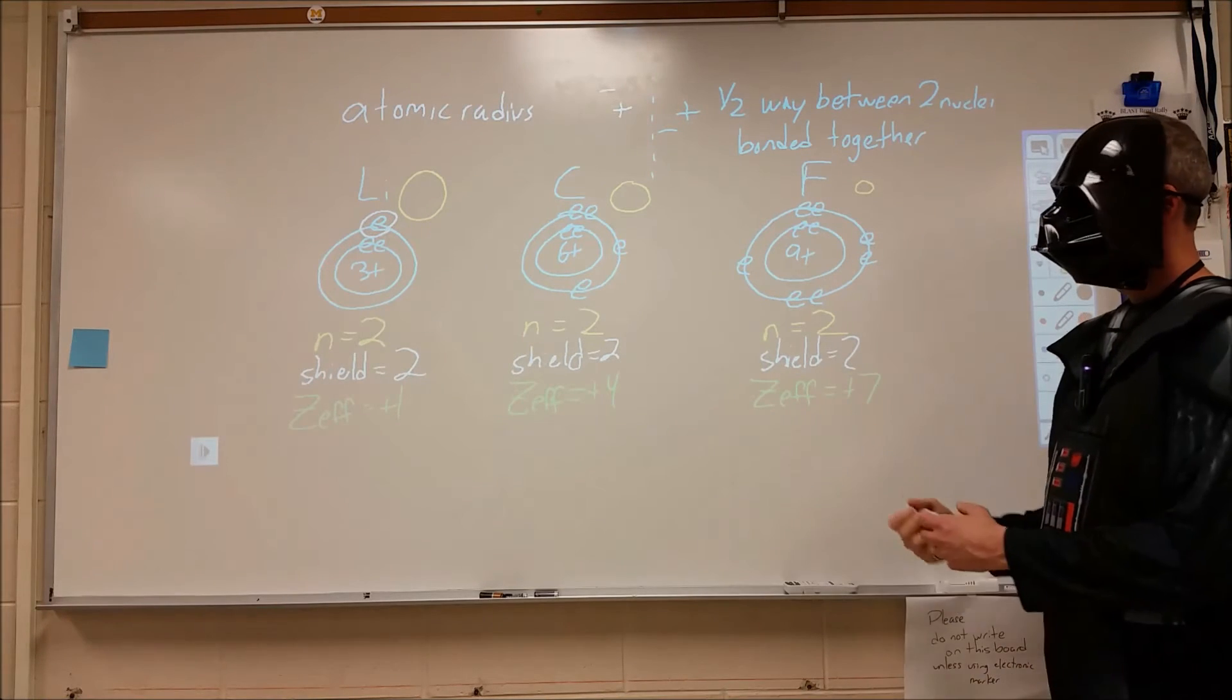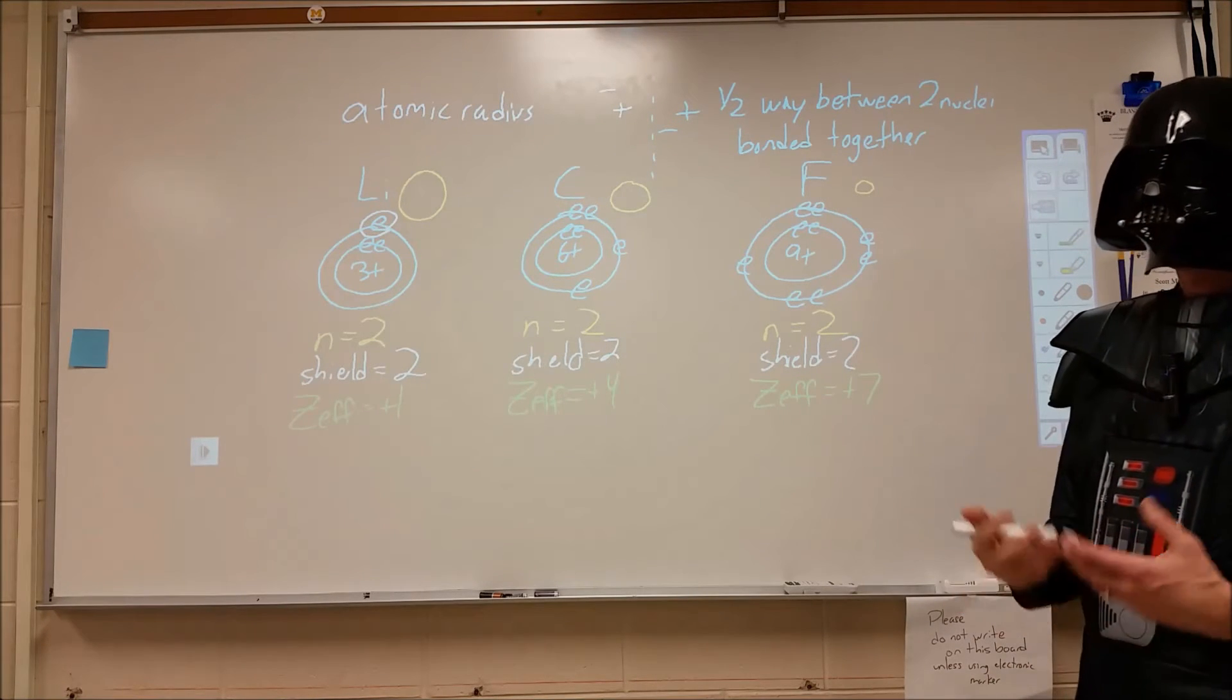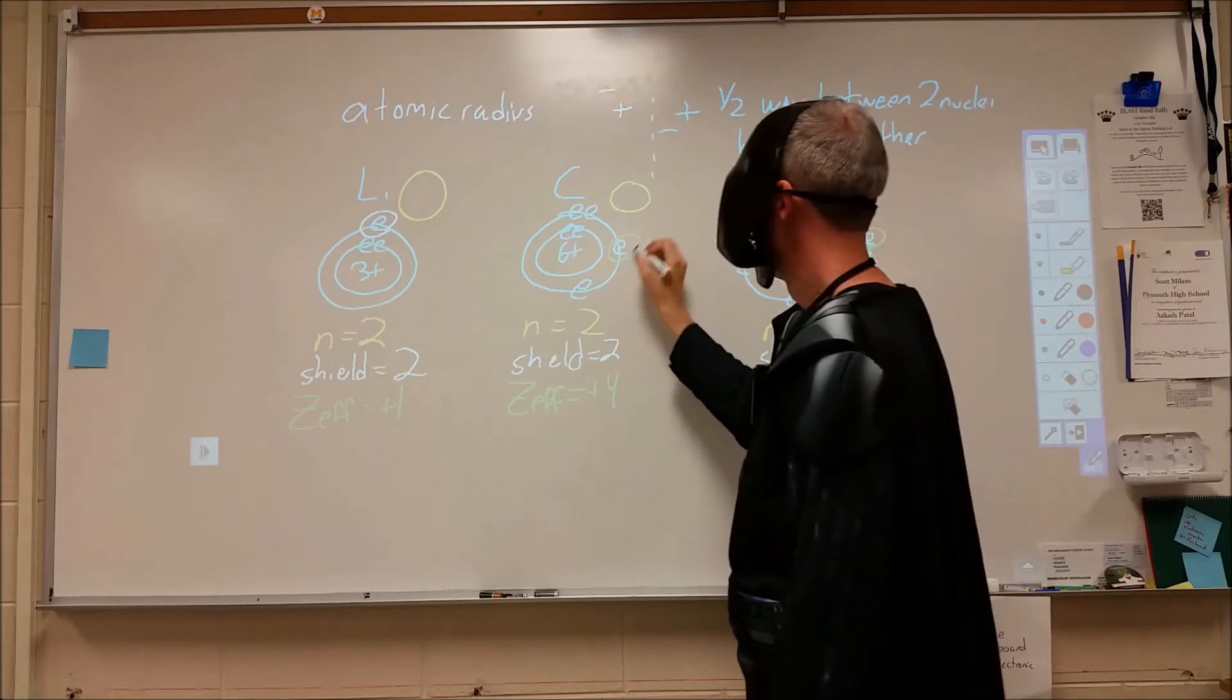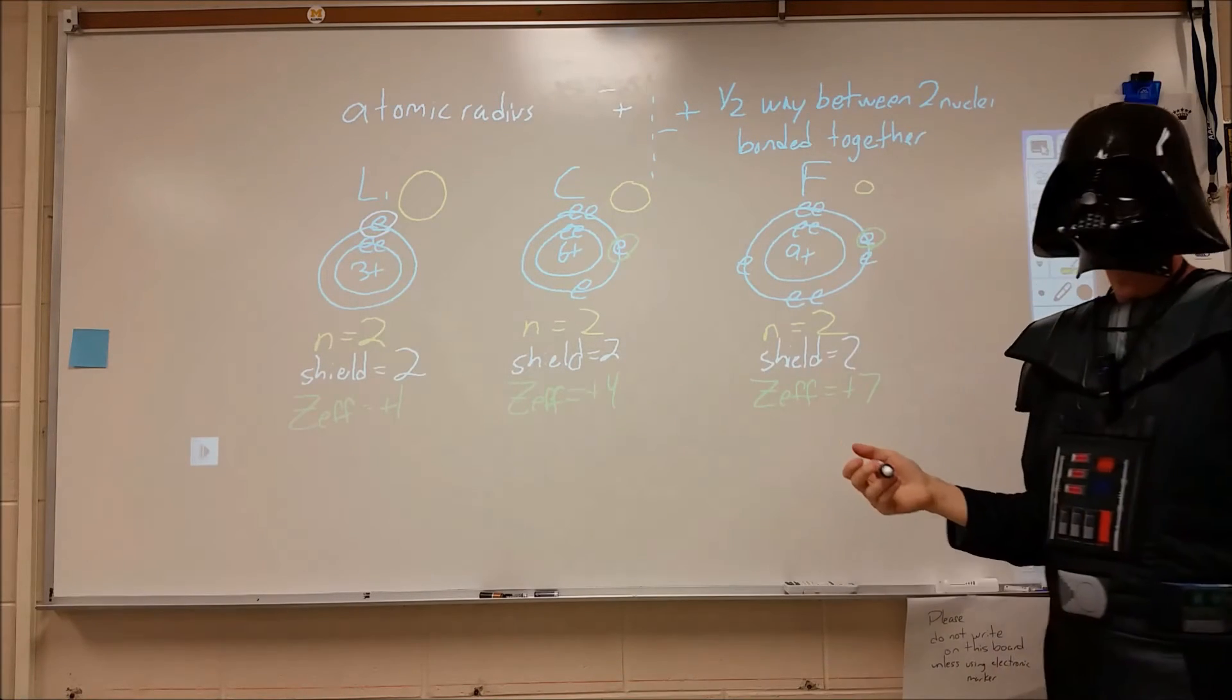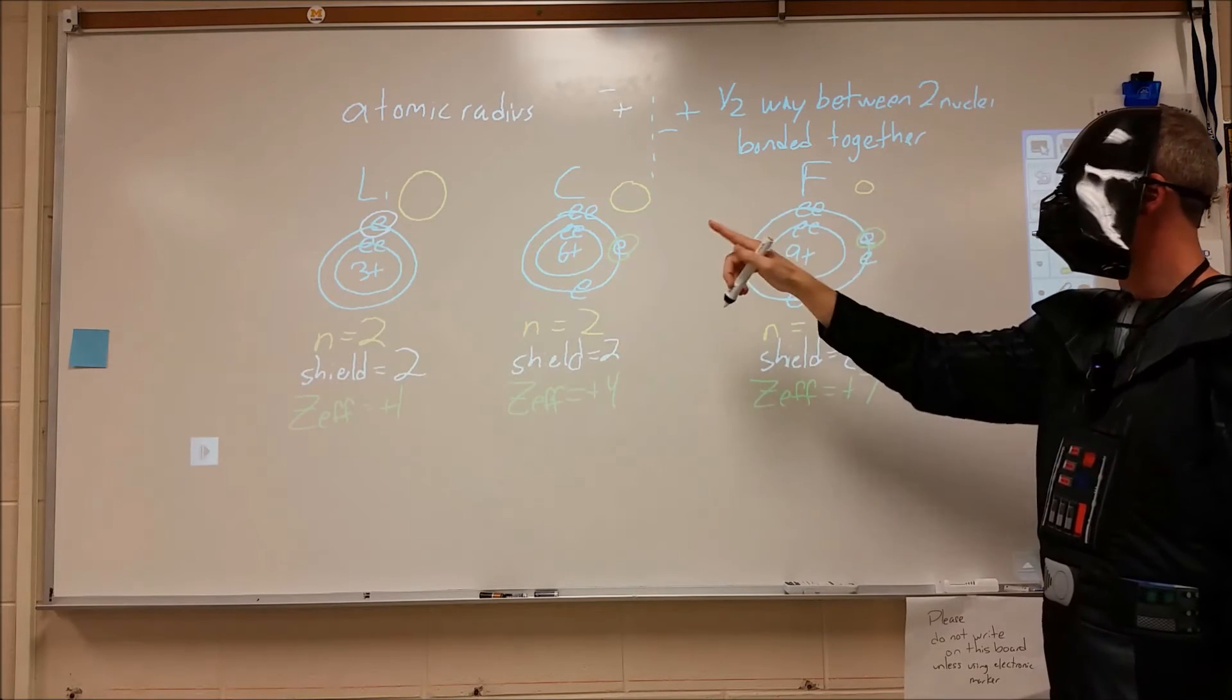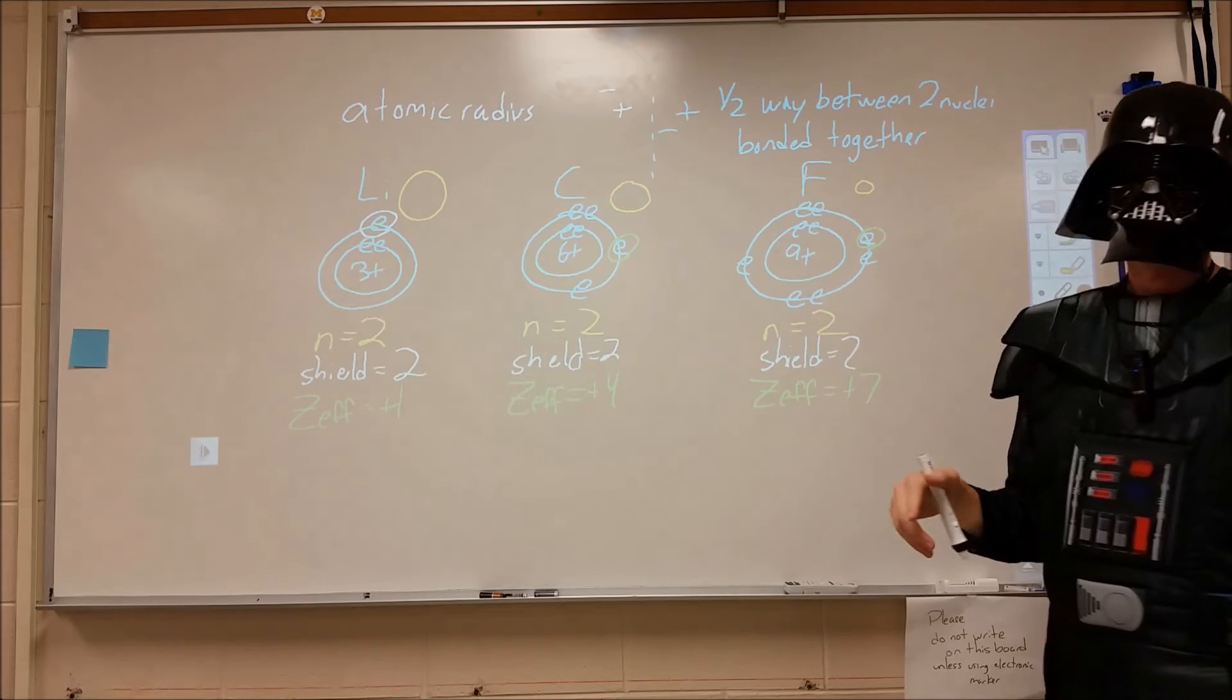So we can see clearly that our effective nuclear charge, a combination of all of the attractions and all of the repulsion on these valence electrons, is increasing as we move across the period. And therefore, we see a size decrease as we move from left to right across a row on the periodic table.